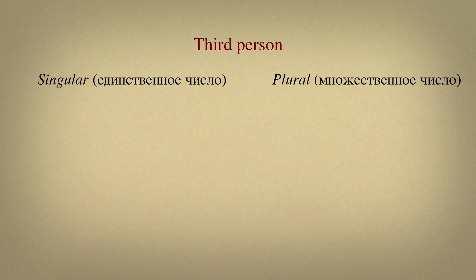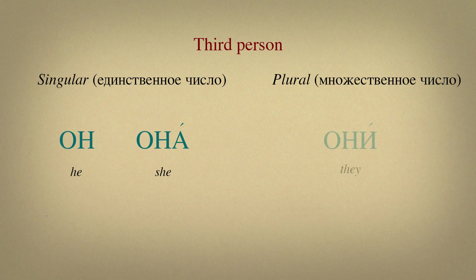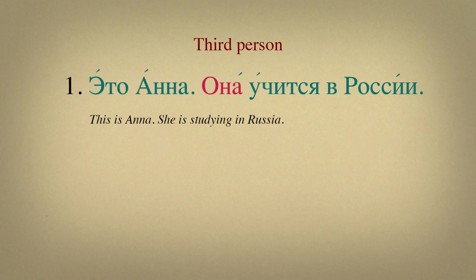Let's move on to the personal pronouns of third person. Pronouns of third person are gender-specific and have singular and plural forms as well. If you are talking about a masculine subject, you would use он. If about a feminine subject — она. Множественное число — они. Let's see examples. Это Анна. Она учится в России. We use the pronoun она here to avoid repetition of the name Анна.